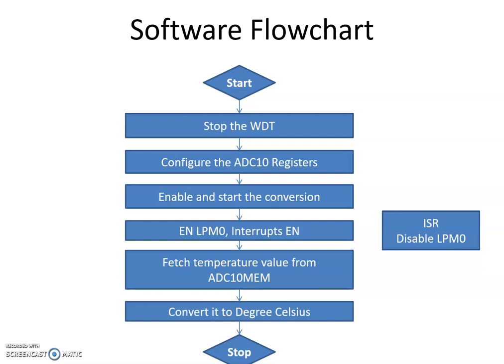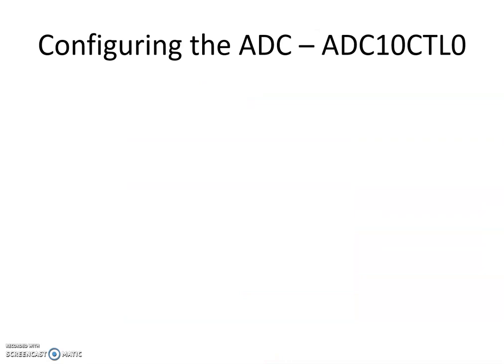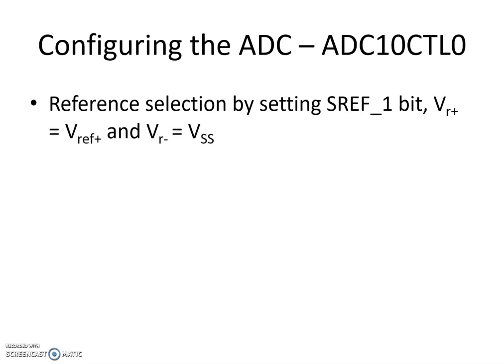Now let's see how to configure the ADC10 CTL1 and CTL0 registers. First there is the SREF bit, which has four values. By default, zero gives you VCC as your VR+. We don't want to use 3.3V — we want to use either 1.5V or 2.5V, so that's the VREF+ voltage, and VR− in this case will be zero. So we are selecting the SREF bit as one for this purpose.